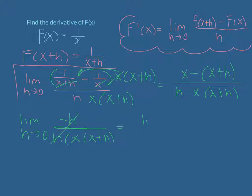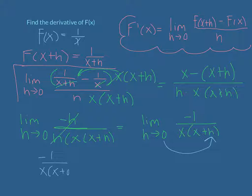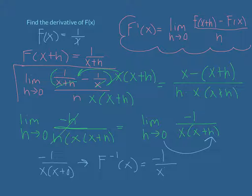The h's cancel, giving the limit as h approaches zero of negative one over x times x plus h. Now, is it okay to plug zero in for h? Yes, because it doesn't give us a multiple of zero in the denominator. Plugging in zero: negative one over x times x plus zero, which is just x times x. So the derivative of this function at any x value is negative one over x squared.